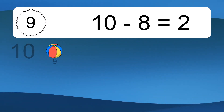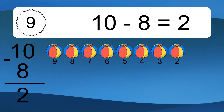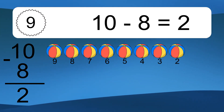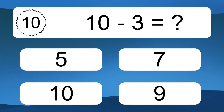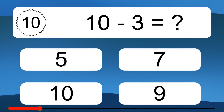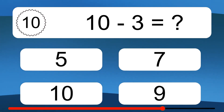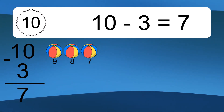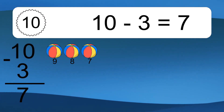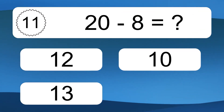10 minus 8 equals 2. Let's count it: 9, 8, 7, 6, 5, 4, 3, 2. 10 minus 3 equals what? 10 minus 3 equals 7. Let's count it: 9, 8, 7.